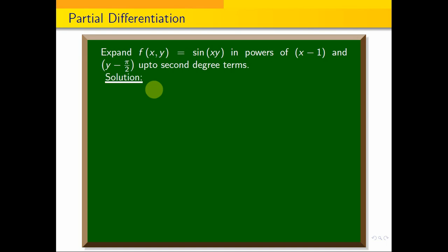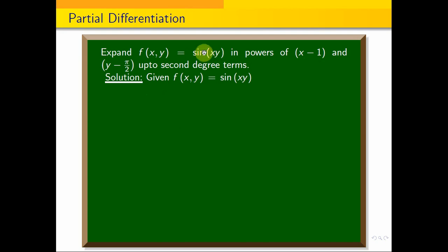In this function f(x, y) = sin(xy), in the Taylor series expansion, what is the meaning of this point? This point is (1, π/2). This function is expanded as a series about that point, in powers of (x minus 1) and (y minus π/2).